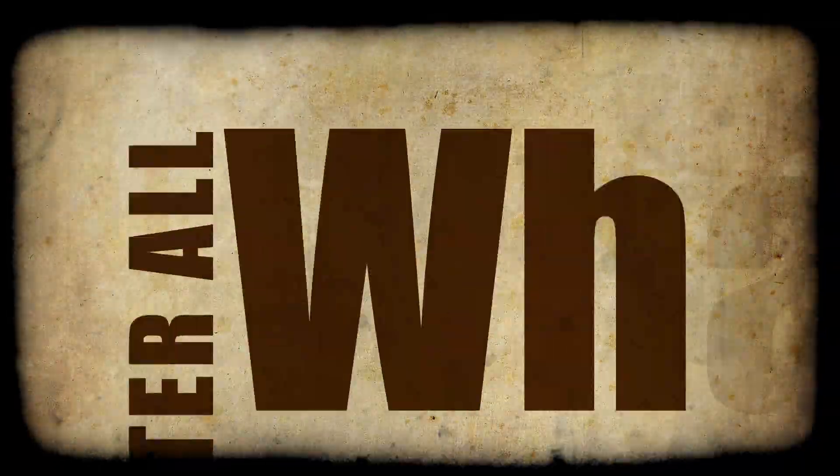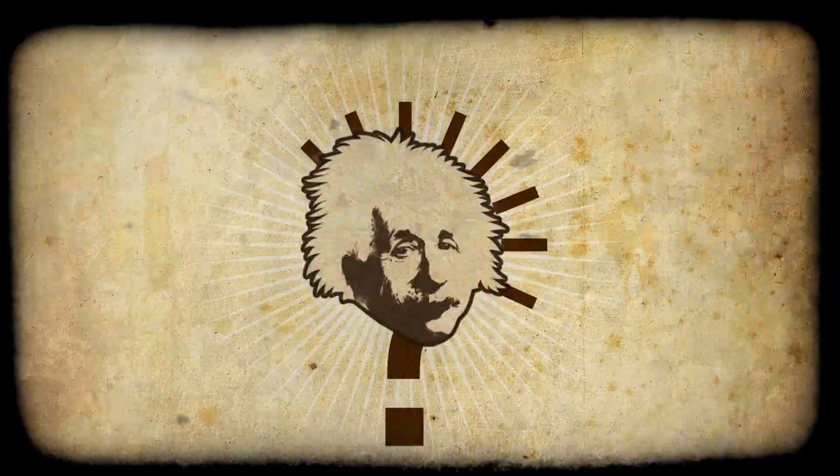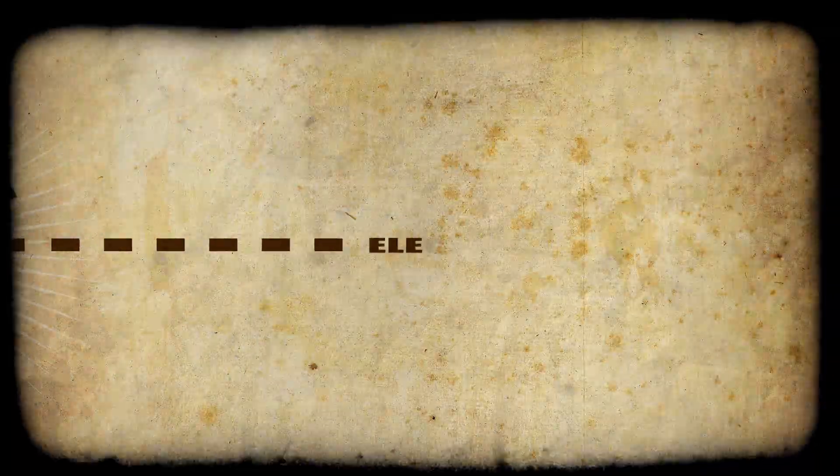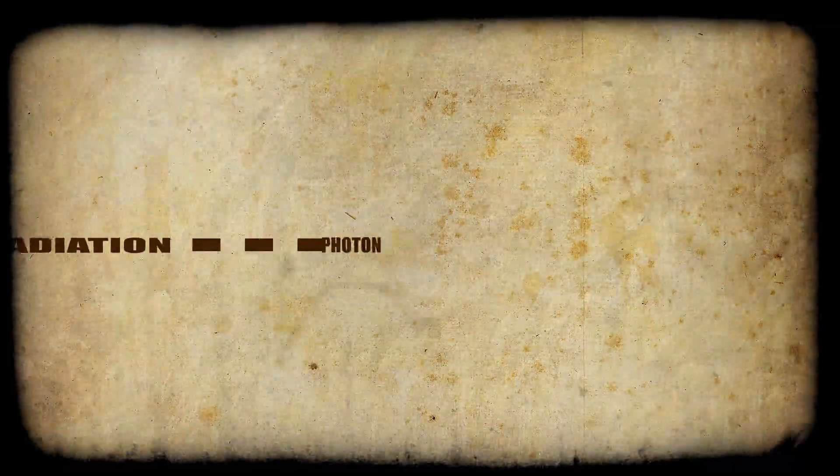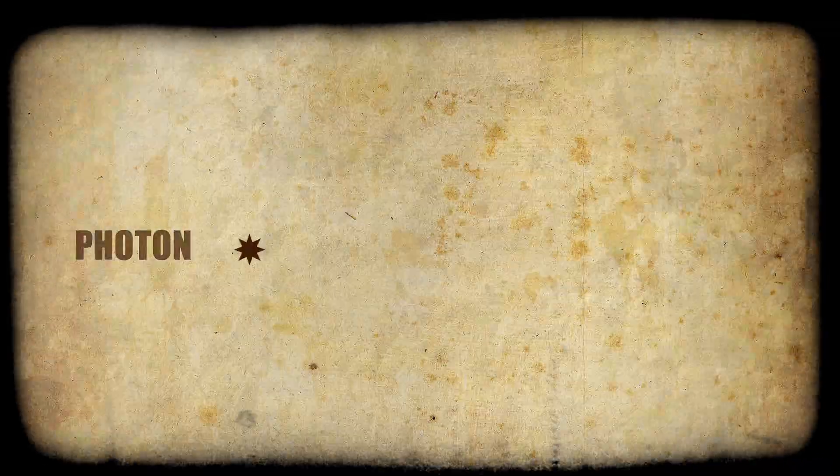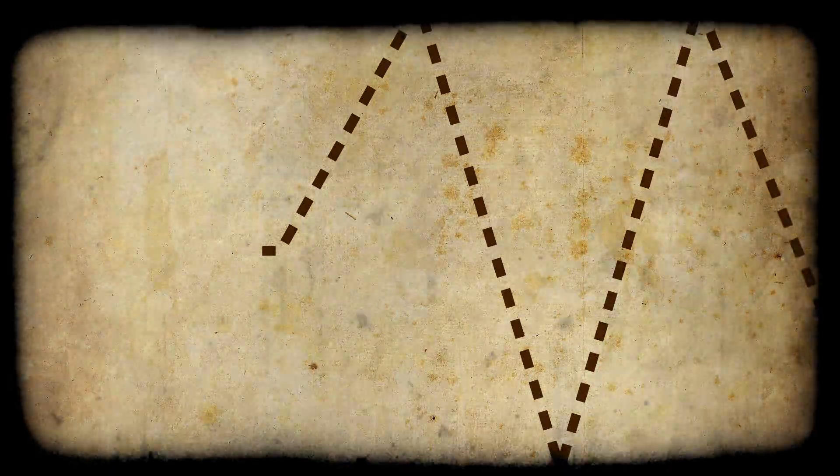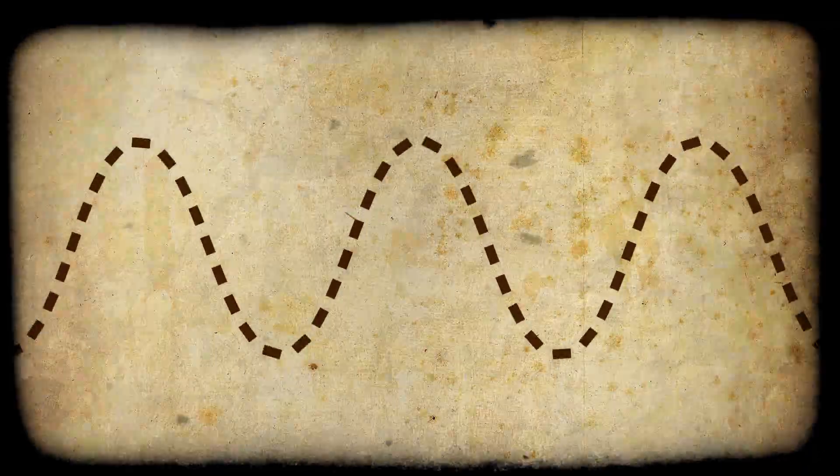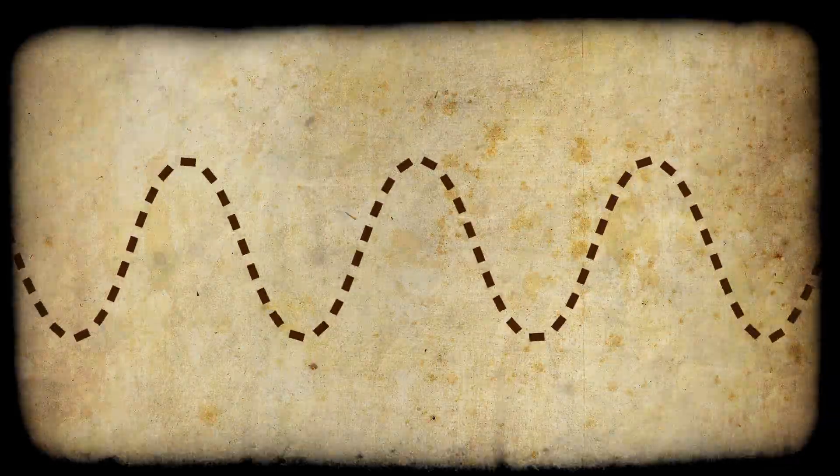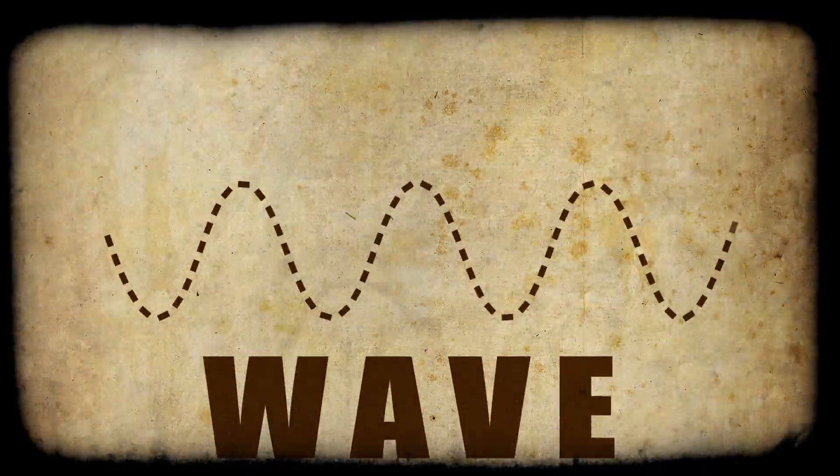But after all, what is light? If you ask a scientist, he will say that light is electromagnetic radiation that exists in tiny packets called photons, and it behaves as both waves and particles. To simplify the explanation, we will talk about light as wave.